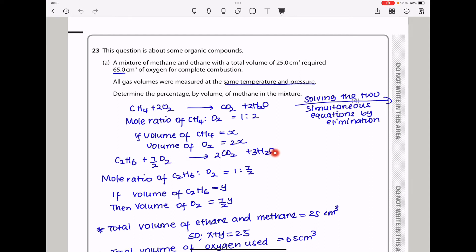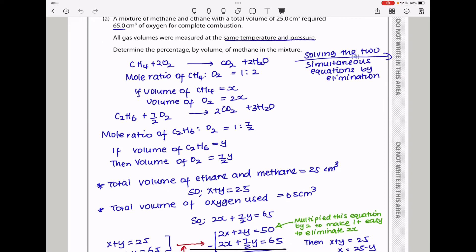For reaction between ethane and oxygen, this is the balanced equation with mole ratio 1 to 7/2. If ethane volume is Y, oxygen used is 7/2Y. They say total volume of ethane and methane was 25, so X + Y = 25. Also, 65 cm³ oxygen needed for complete combustion means 2X + 7/2Y = 65. Now we have two simultaneous equations.